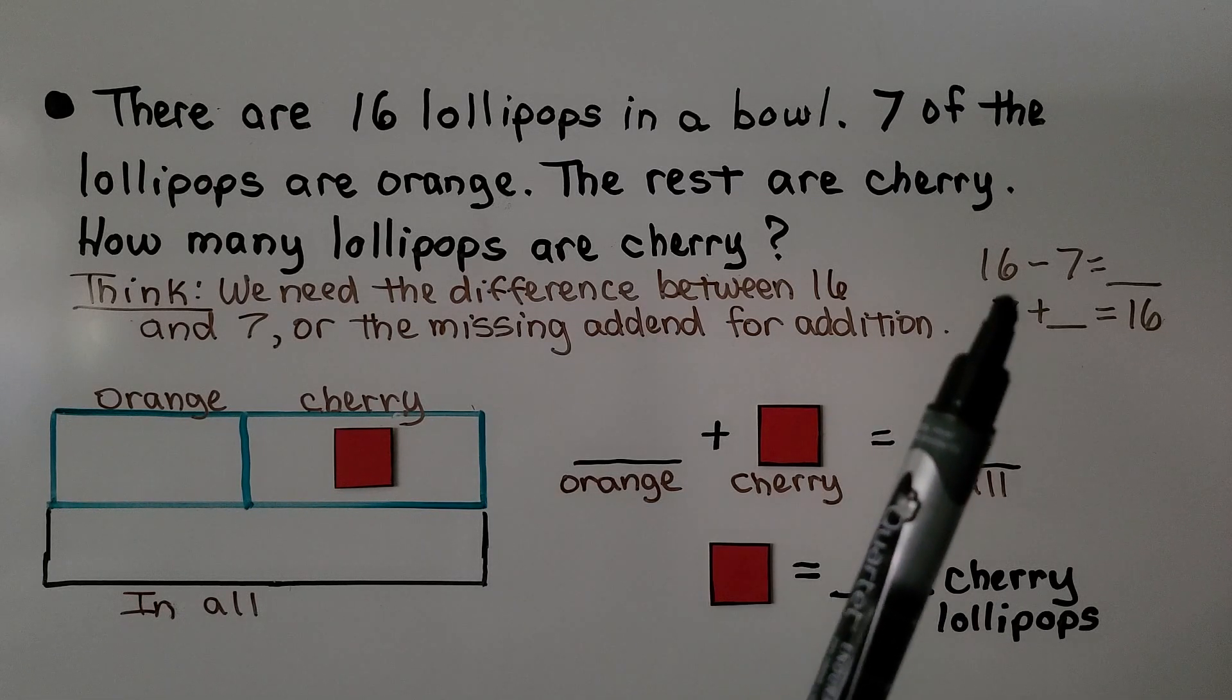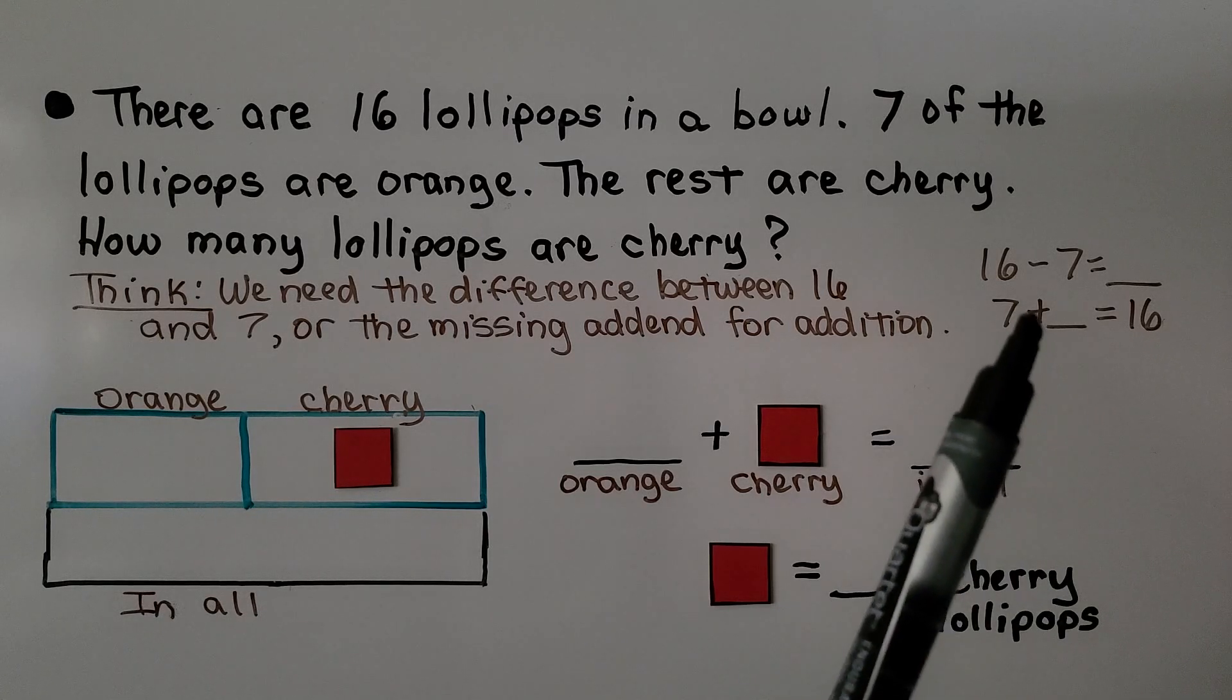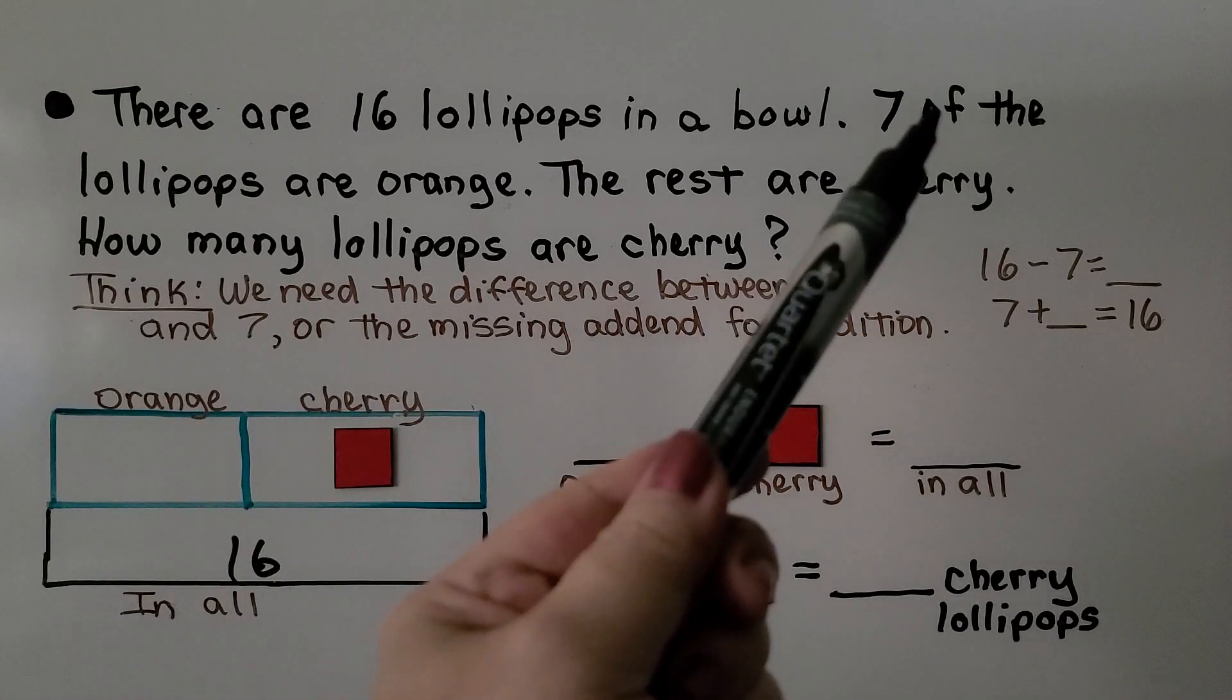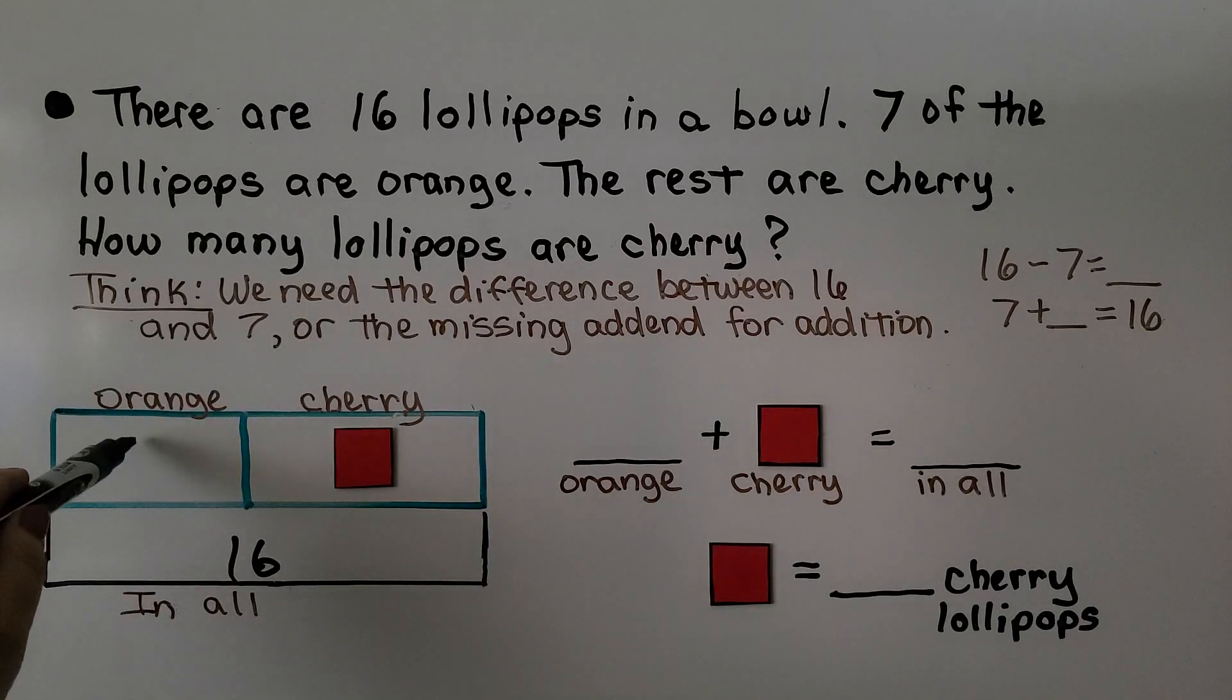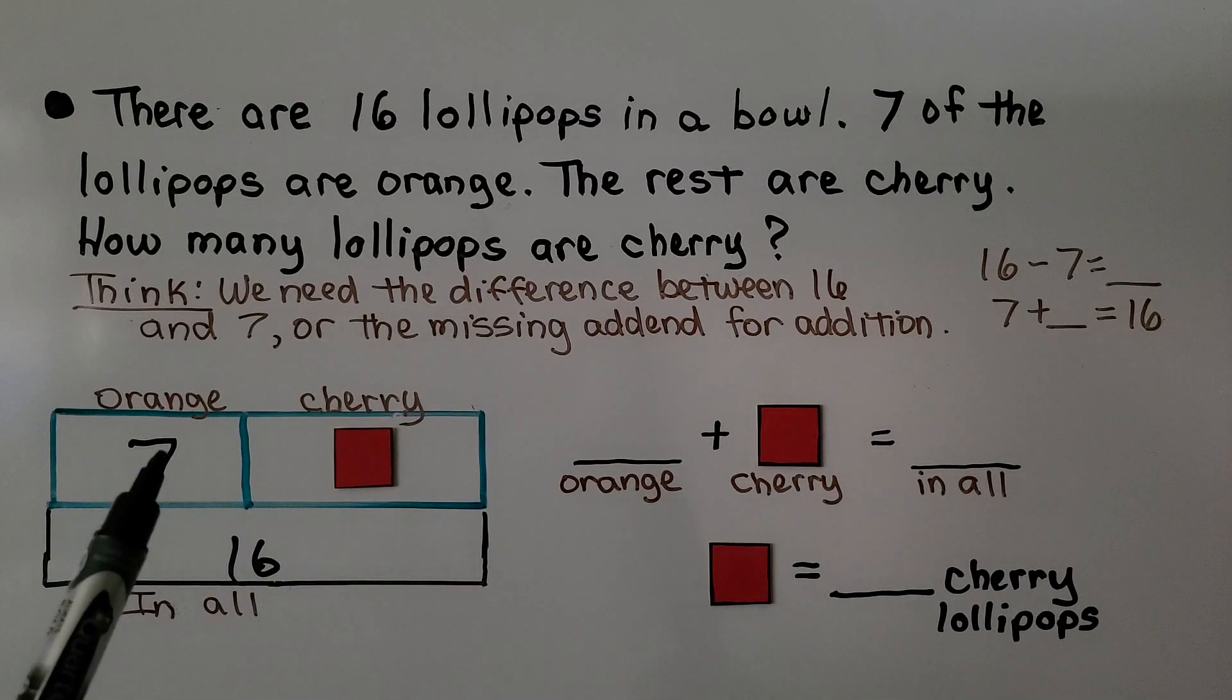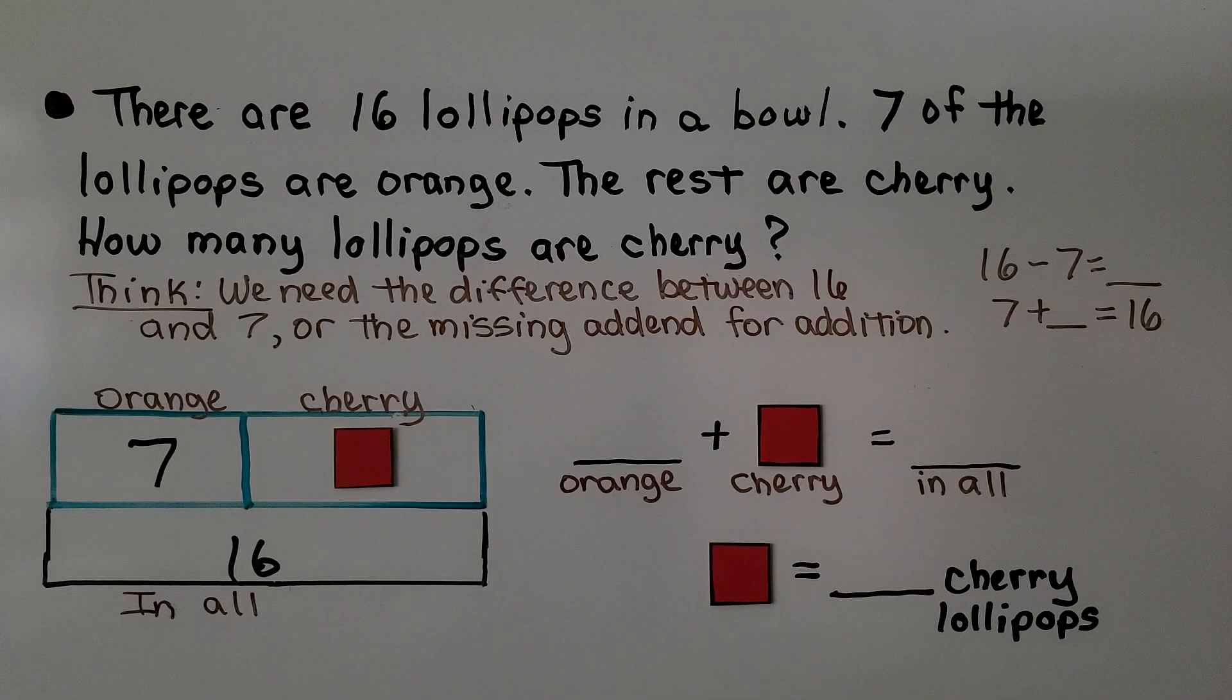We can also think of it as a missing addend for addition because addition and subtraction are related. We can think of it as 16 minus 7 equals the number of cherry. Or we could think 7 orange plus the number of cherry equals 16. In our bar model, we know there were 16 in all. We also know that 7 of the lollipops are orange. Using a related addition sentence to subtraction, we have 7 plus some number that is cherry equals 16 in all.